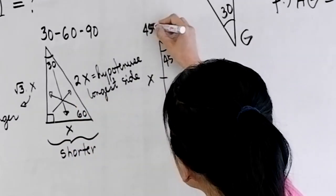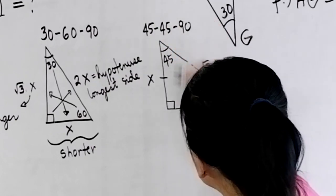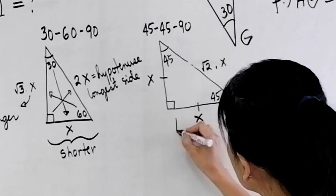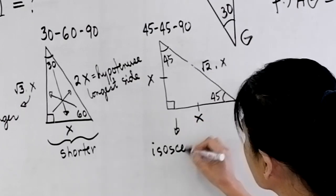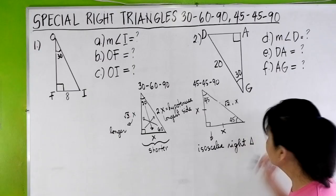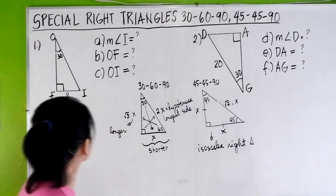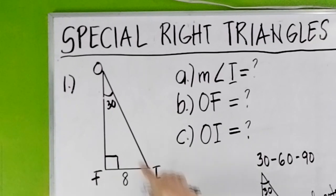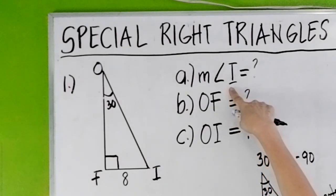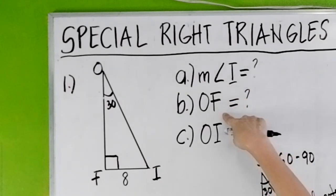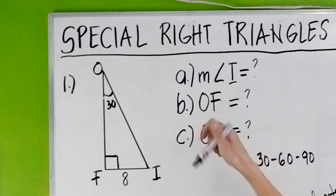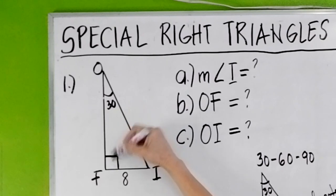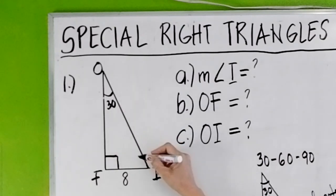Let's look at the 45-45-90, which we call an isosceles right triangle. Example number 1: you have triangle EOF. The angle O is 30 degrees and FI is 8. We have to find the measurement of angle I, OF, and OI. Knowing that this is 90 plus 30, that is 120, so angle I will be 60 degrees.